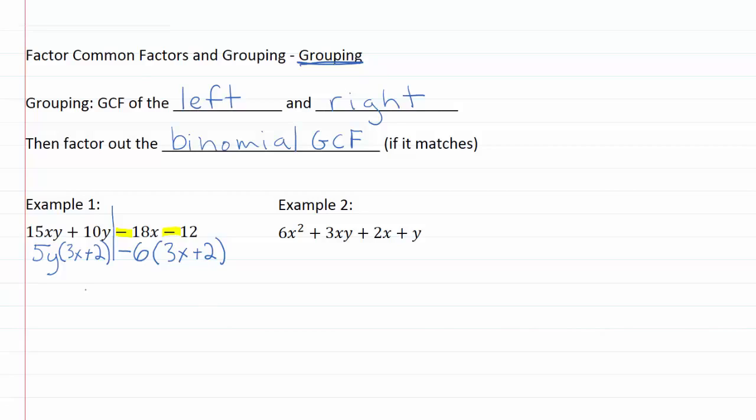So now our instructions tell us then factor out the binomial GCF. So let's look at the expression as a whole again. So now we've got a 3x plus 2 on the left hand side and a 3x plus 2 on the right hand side. So since these two match we can now pull it out of both sides of the expression. So now we've got 3x plus 2, put that in parentheses and then we'll start a new parentheses for what is left over. We've got 5y minus 6 and there you have it. So we've now successfully factored this expression. We have a product of two different things multiplied together, 3x plus 2 times 5y minus 6.